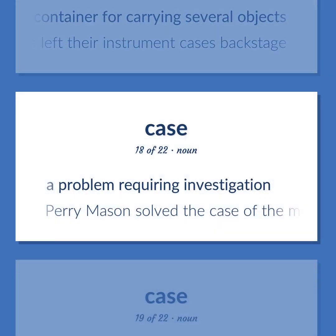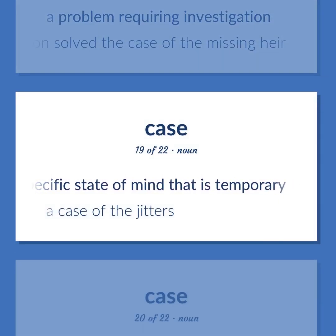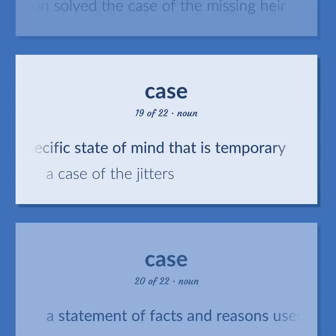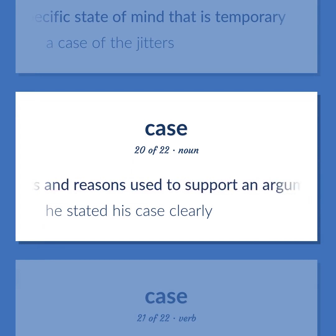A problem requiring investigation — Perry Mason solved the case of the missing heir. A specific state of mind that is temporary — a case of the jitters. A statement of facts and reasons used to support an argument — he stated his case clearly.